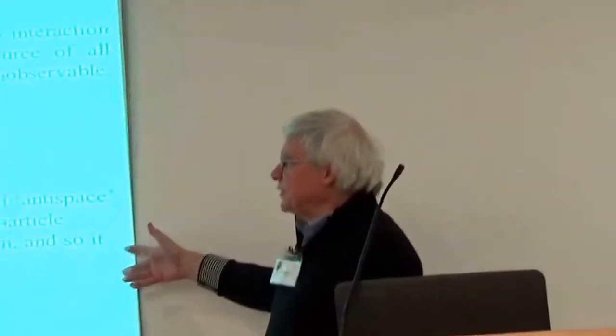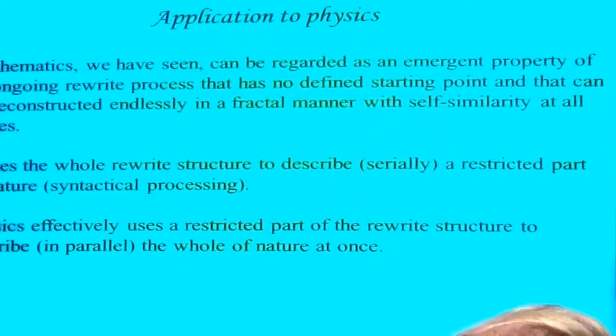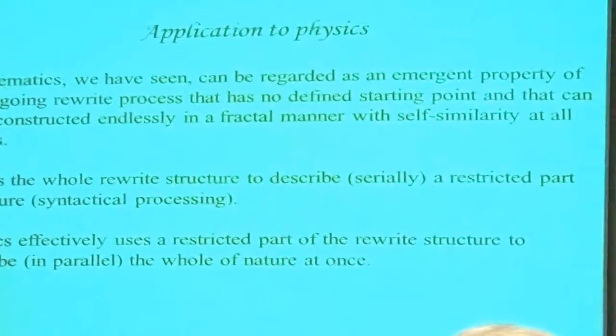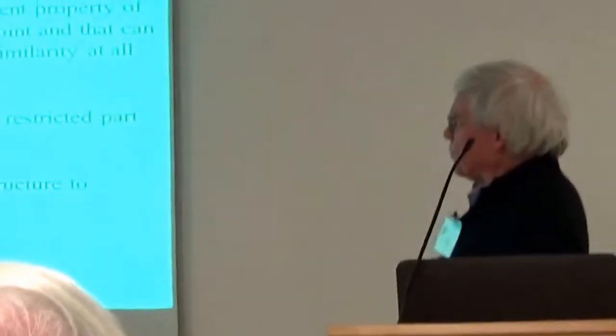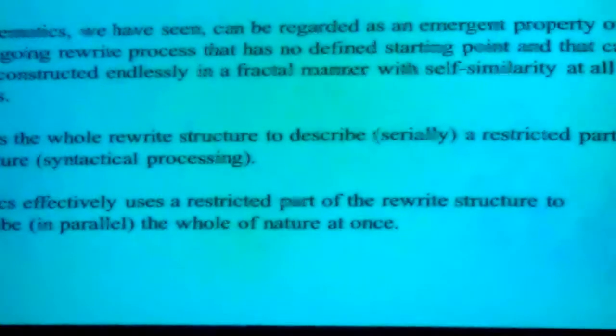We didn't just do it for physics — we can do it for any defined system: other parts of physics, chemistry, biology. Mathematics can be seen as an emergent property of an ongoing rewrite process, with no starting point and endlessly reconstructed. You use the whole rewrite structure to describe it serially. Physics uses a restricted part of the rewrite structure, repeated over and over, to describe in parallel the whole of the universe at once. That's how they kind of diverge yet are connected — we're using the structure in slightly different ways.